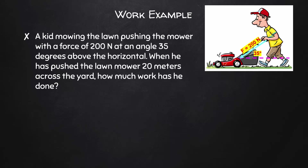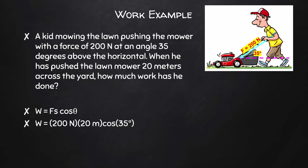A kid mowing the lawn pushes the lawn mower with a force of 200 newtons at an angle of 35 degrees above the horizontal. When he has pushed the lawn mower 20 meters across the yard, how much work has he done? The equation is force times displacement times cosine theta. Plugging in our known values, he did 3,277 joules of work.